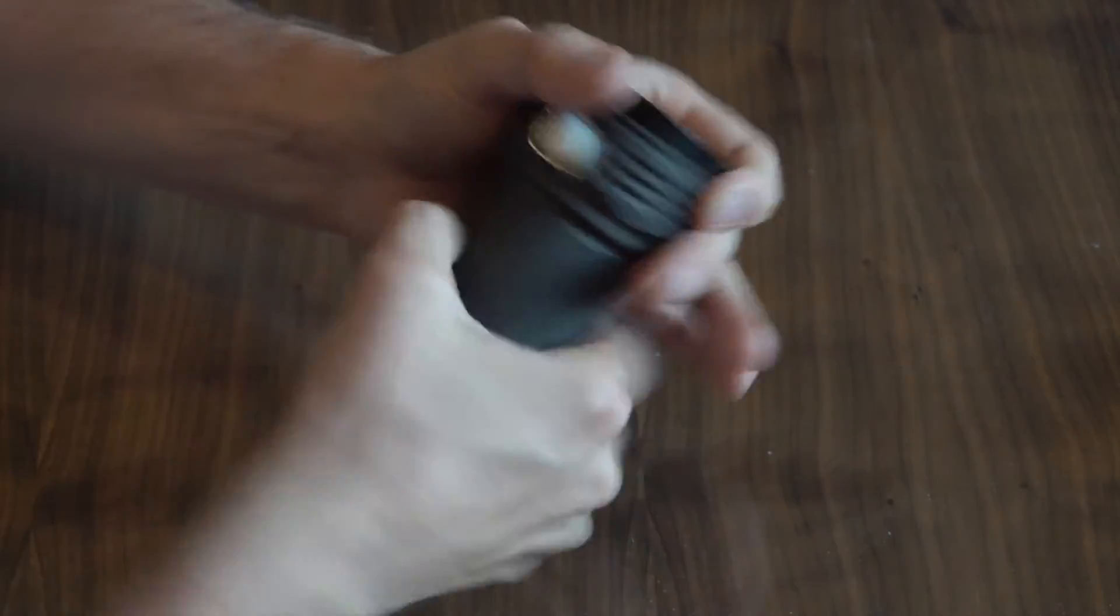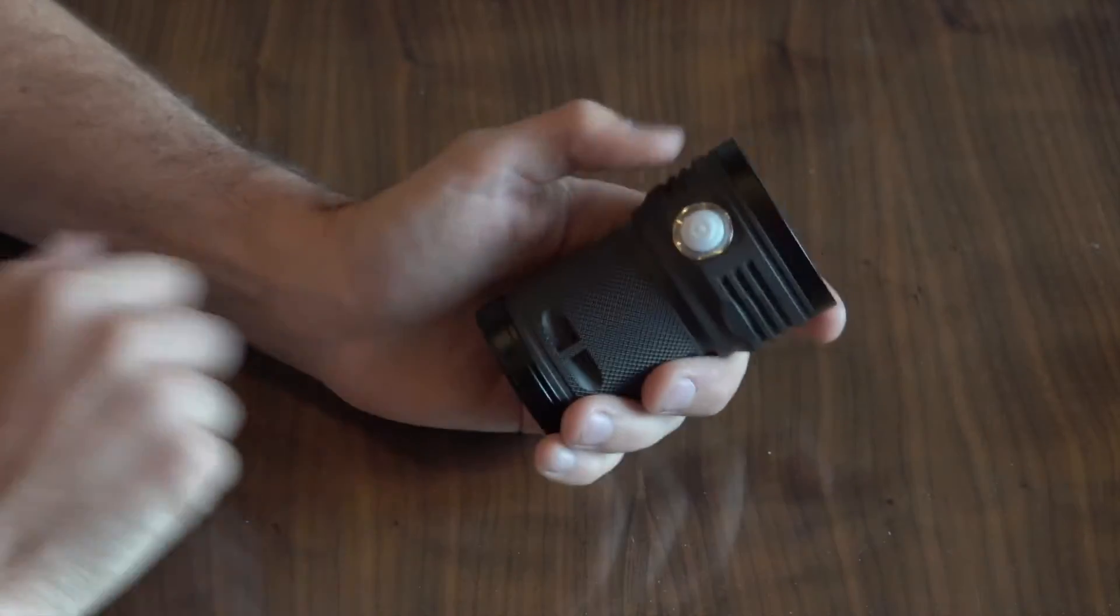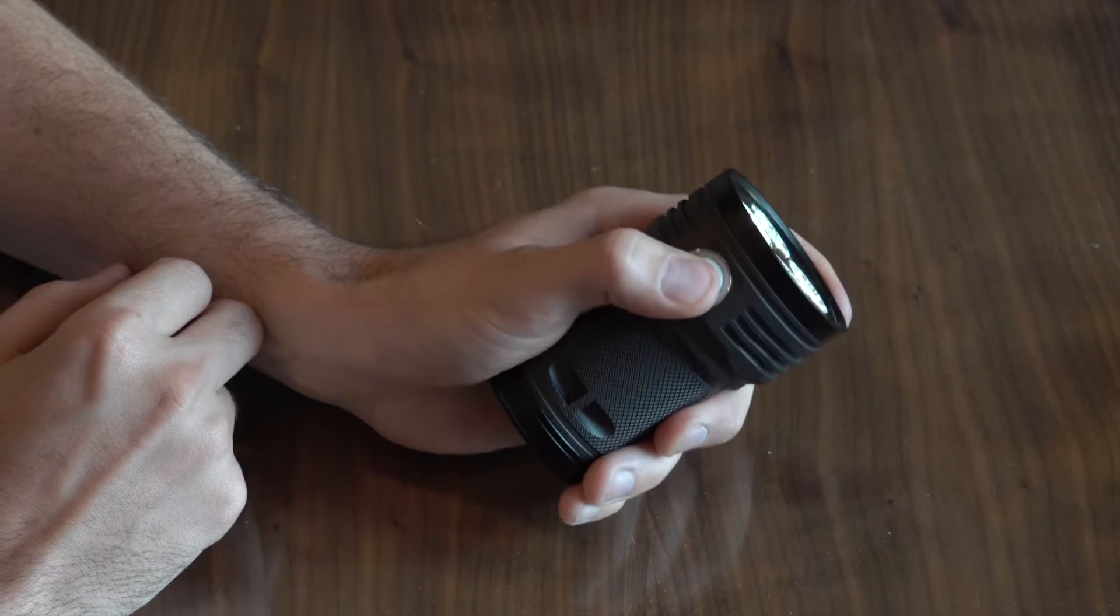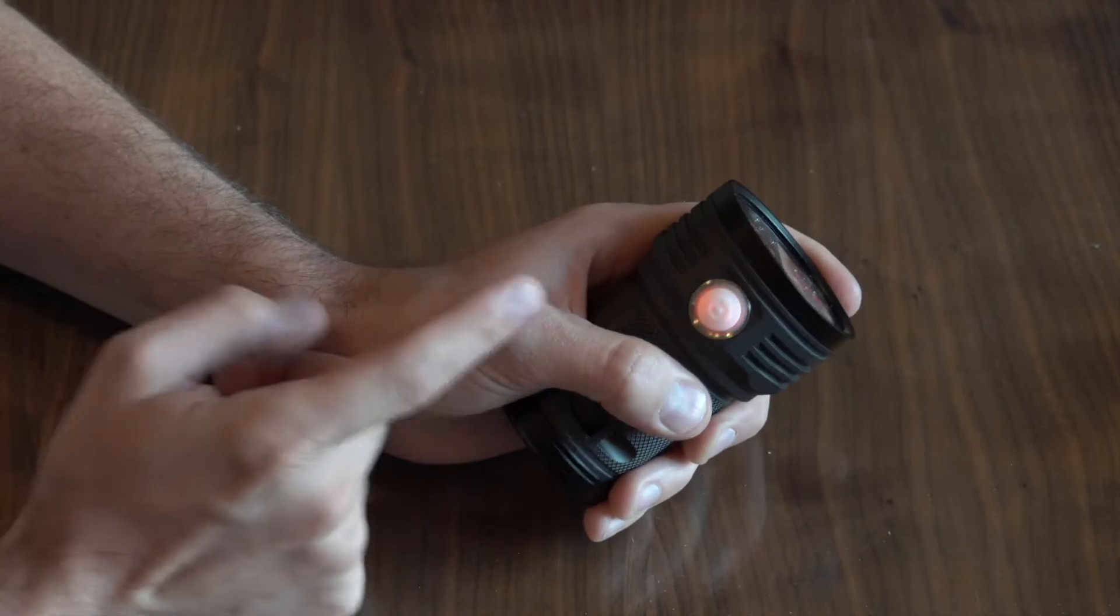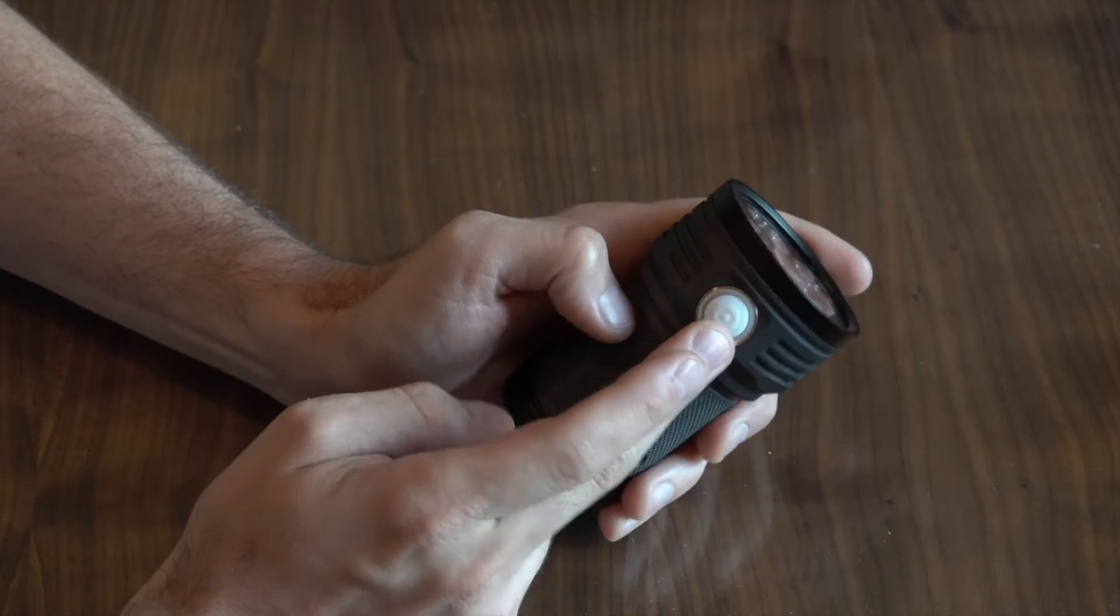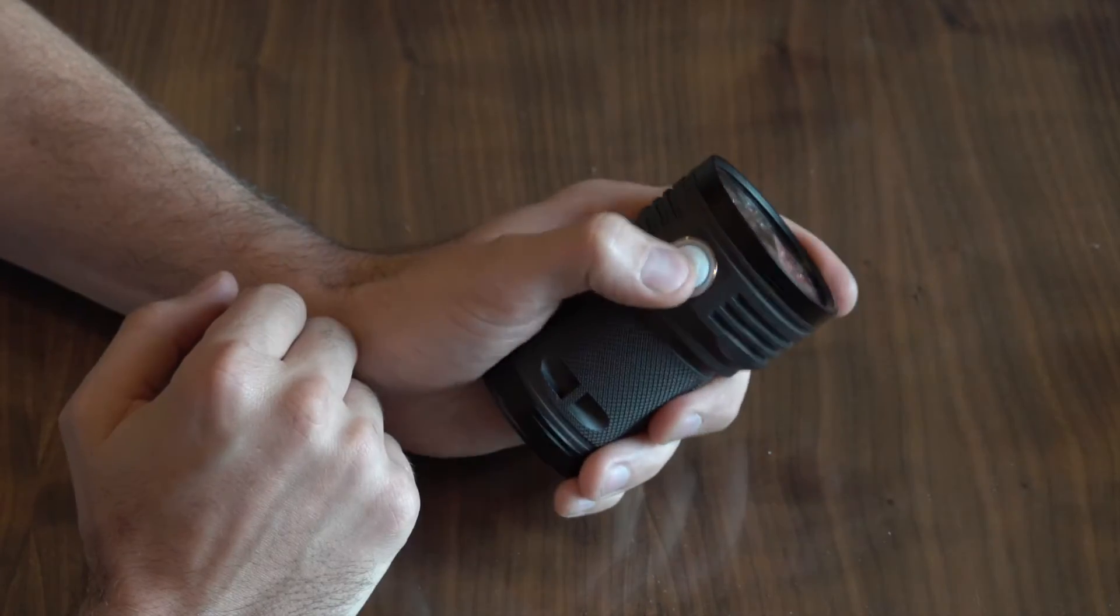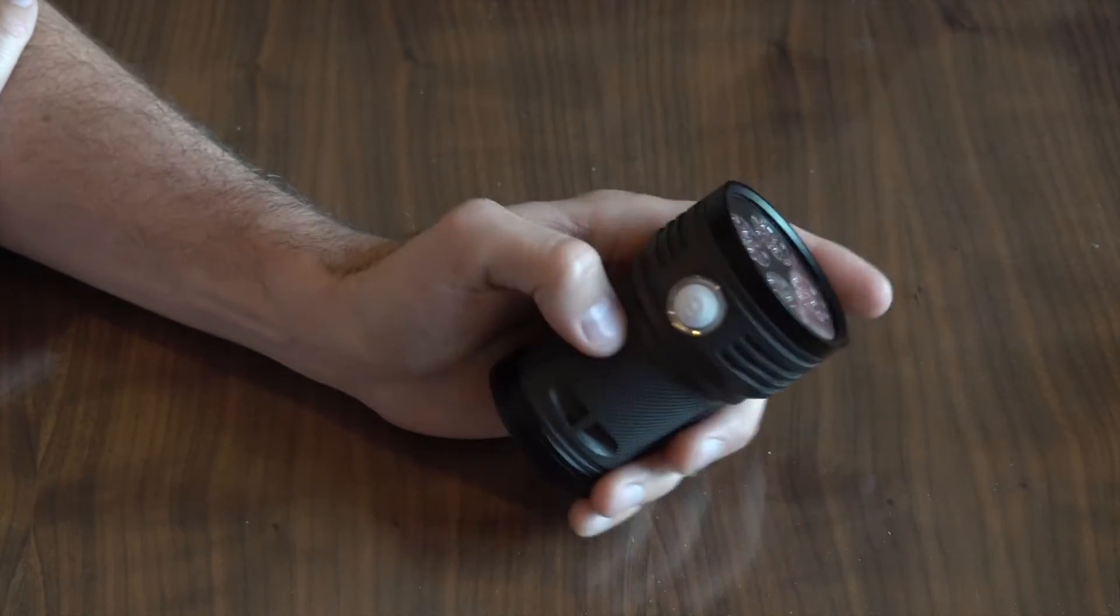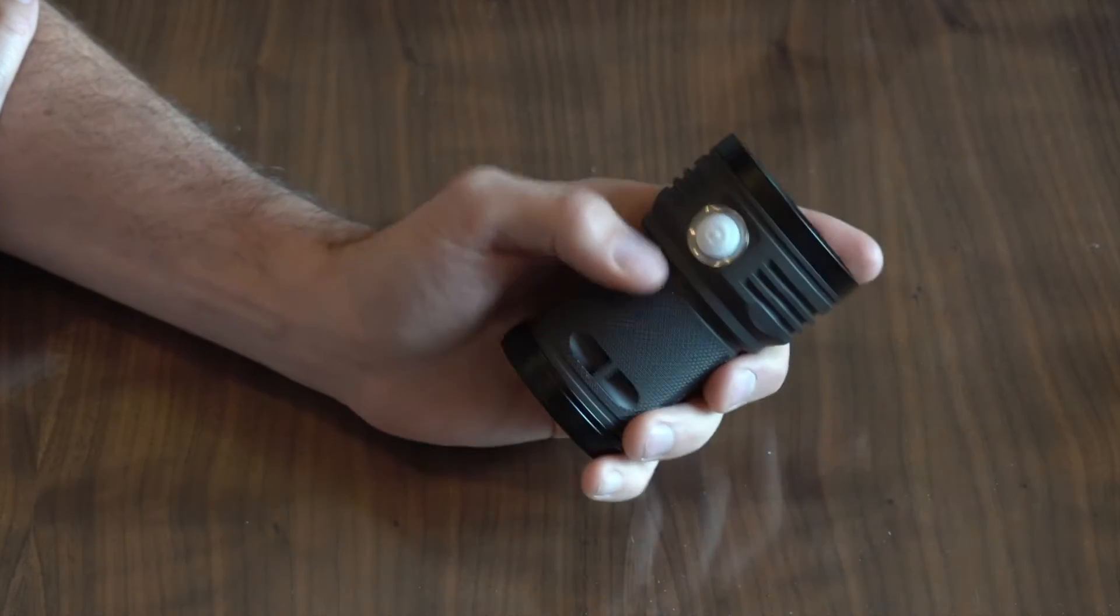But there's also an electronic lockout. If you click the switch six times, one two three four five six, the light will blink red on the indicator light and now the light is locked out. I've received a lot of emails from people thinking that their light was broken because it didn't do anything when they went to click the button.